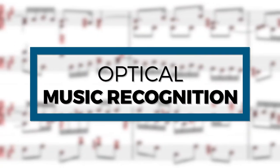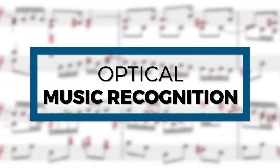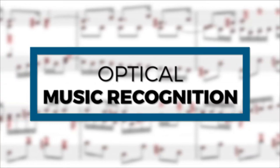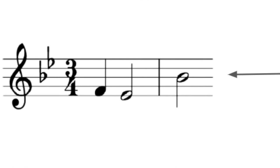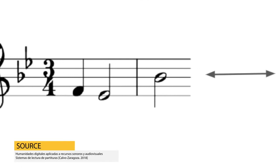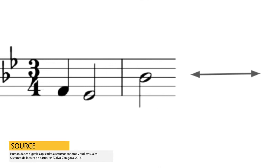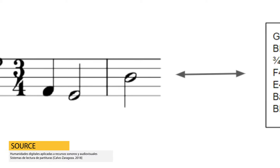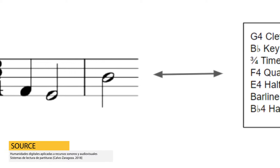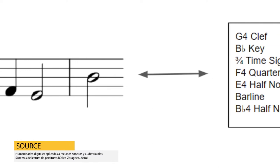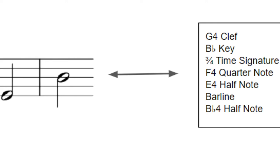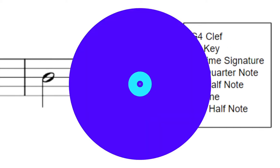Optical music recognition, known as OMR, is a research field focused on how to computationally read music notation in documents. Recent advances in machine learning, namely deep learning, have led the research community to discover workflow pipelines that can recognize and encode full music scores with high accuracy. It can be noted that this process is close to text recognition. Still, could we exploit music particularities to improve these recognition results?